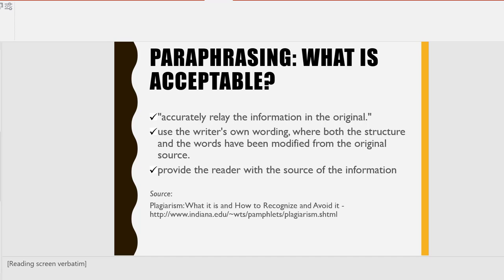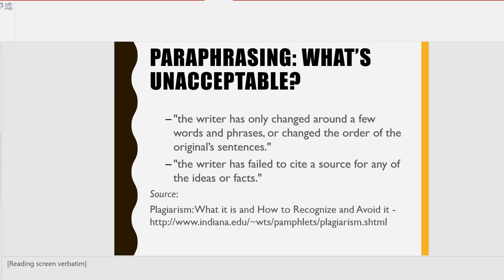Paraphrasing — what is acceptable: accurately relay the information in the original; use the writer's own wording where both the structure and words have been modified from the original source; and provide the reader with the source of the information. What's unacceptable: the writer has only changed around a few words and phrases or changed the order of the original sentences, or the writer has failed to cite a source for any of the ideas or facts.